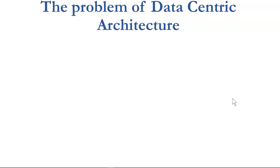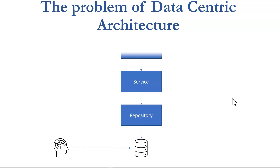Architectures help us convert developers' thoughts to code, to computer language. With a data-centric architecture, developers often find ourselves focusing our minds on the data. We would look at the requirement first and then develop the data structure, and then go backward: repository, service, and then UI — or in other terminology, data access, then business logic, then UI. The problem is that our code files or folder structures don't reflect requirements — they don't reflect the intent of the application or the intent of the business.